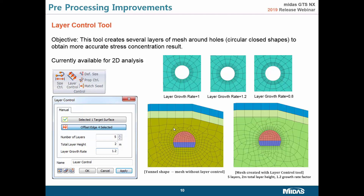Another interesting new tool is the layer control tool, found under mesh control. This tool is used to create a nice mesh around holes or circular closed shapes, creating several proportionally aligned or offset layers of elements. More dense elements can be placed close to the circular shape when the growth rate factor is greater than one; if the factor is less than one, the mesh is denser in the opposite direction. For example, using five layers, a total height of two meters, and a growth rate of 1.2 was used to create mesh for a tunnel section.